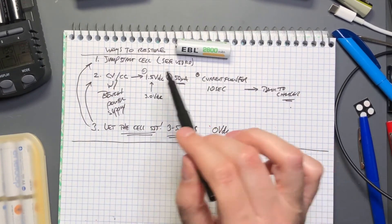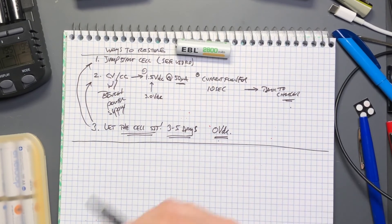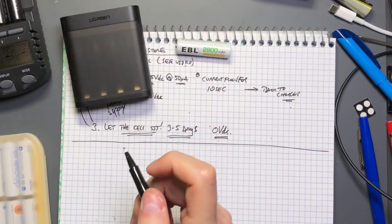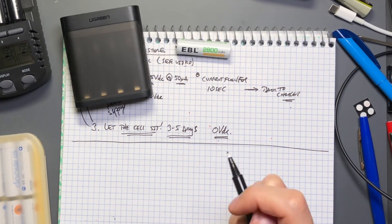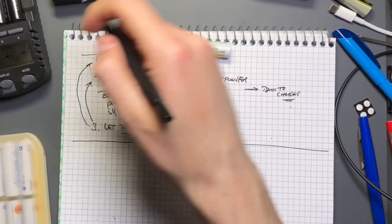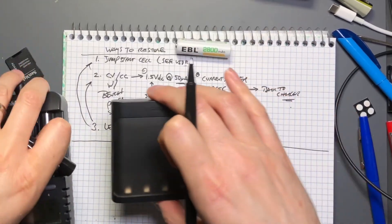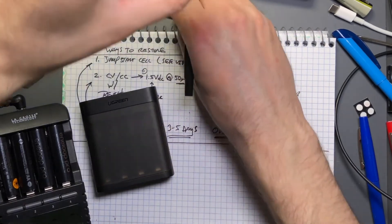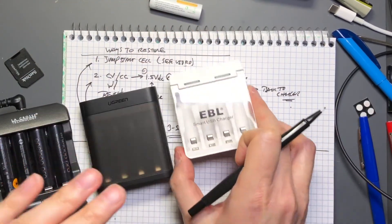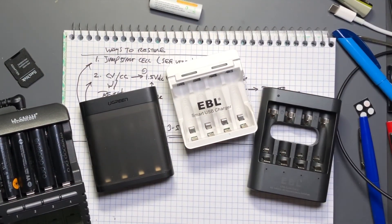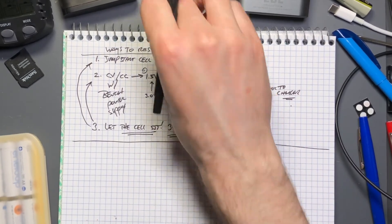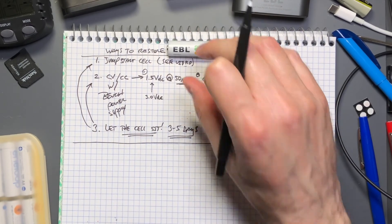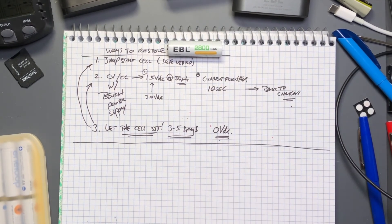When you do get the voltage back up to 0.5 volts or thereabouts and a charger accepts it and begins to charge it, pick a charger that has active temperature monitoring on it. Every one of these chargers has active temperature monitoring: the LaCrosse Technologies, the Ugreen charger which I tore apart, this EBL one, and this EBL one.